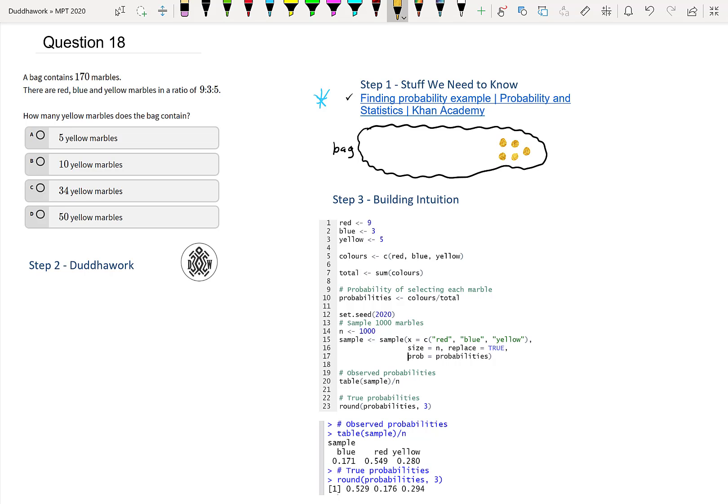We have three blues. One, two, three. And we have nine reds. So one, two, three, four, five, six, seven, eight, nine.